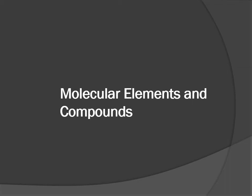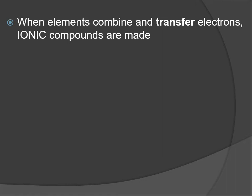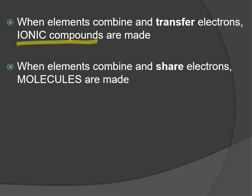When elements combine, they could transfer electrons. If one atom transfers electrons to another, you end up with an ionic compound. But some atoms don't like to lose their electrons, so when they combine with other atoms they don't give up their electrons. Instead, they share their electrons, and when atoms share electrons they form what's called a covalent bond.